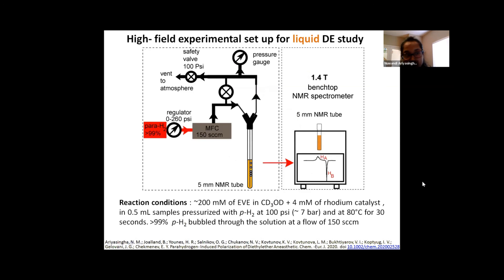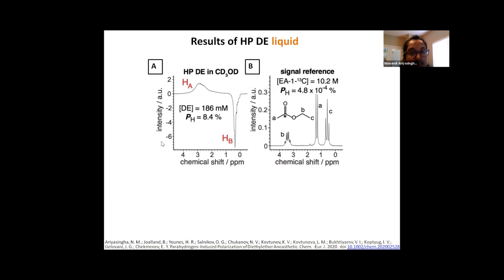And similar to before, the experiments were done in two different fields: a high field and a low field, and we studied both the liquid diethyl ether and the gas-phase diethyl ether. So the high field experimental setup is shown here. In this case, we used 99% enriched parahydrogen, then through a mass flow controller into the pressurized NMR tube with the catalyst and the precursor molecule. And after bubbling for a certain amount of time, we stopped the gas flow and the spectra were collected at 1.4 tesla NMR spectrometer. So this is the resultant expected spectrum of the hyperpolarized diethyl ether in the liquid phase. And this was our signal reference.